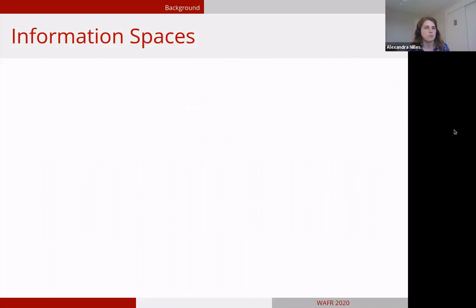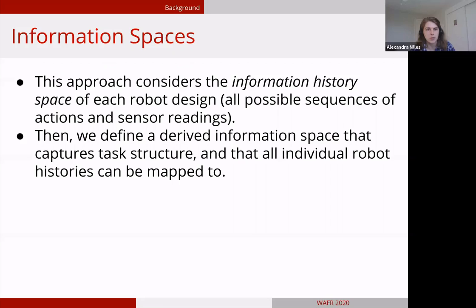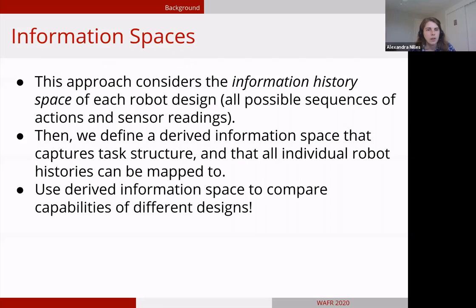The last piece of background is information spaces, which are a game theoretic approach to analyzing information requirements of tasks. First we consider the information history space of every robot design we're looking at, all the possible sequences of actions and sensor readings that robot can produce. Then the goal is to define a derived information space that captures the task structure and allows us to make statements about success. Another key feature is that all of the individual robot histories, even if they have different designs, can be mapped to this same derived information space so that we can reason about what the robots know. We can use that to compare the capabilities and success of different designs.